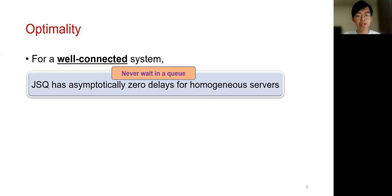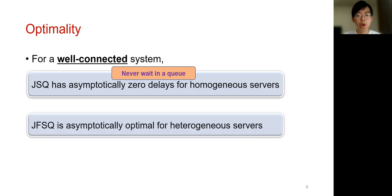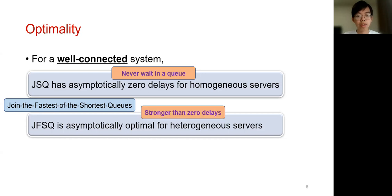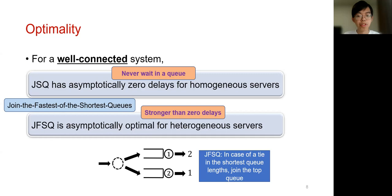Then for the case when servers are heterogeneous, that is servers are having different speeds, we show that an algorithm which we call Join the Fastest of the Shortest Queues, can minimize the mean response time asymptotically. Note that this result is stronger than a zero-delay result because it also takes into consideration the service time of a job. JFSQ is a simple variant of JSQ. When there are multiple feasible servers with the same shortest queue length, JFSQ will break the tie by choosing the server with the fastest speed. Let us take a look at this example. Suppose there are two empty servers with service rates of 2 and 1. Then JFSQ will route jobs to the first one and it is the optimal choice, but JSQ will think that the two servers are the same and may make a suboptimal selection by routing the job to the second server.